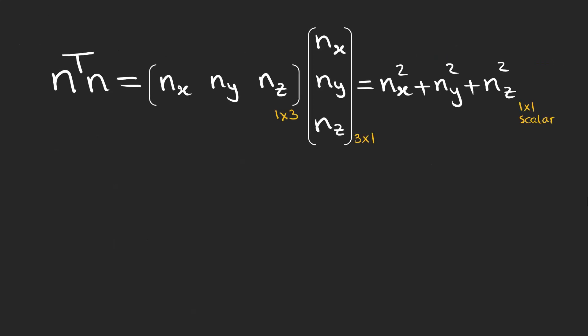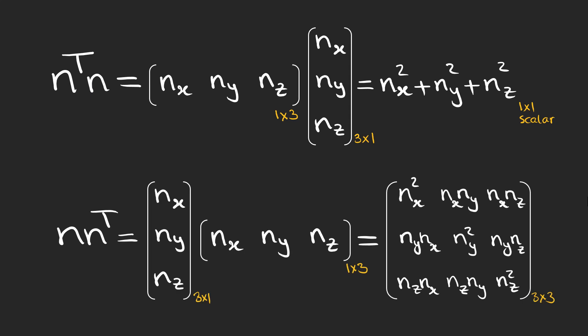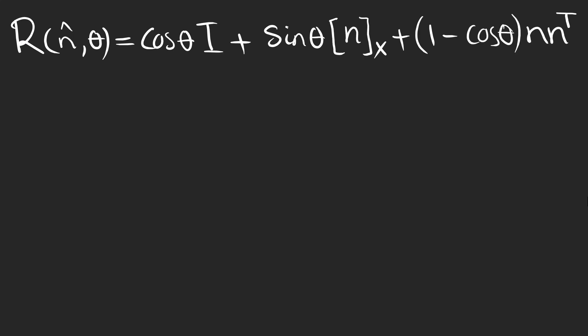Pay attention that n transpose is a 1 by 3 matrix and n is a 3 by 1 matrix. This product you see on the screen is called the inner product of the two vectors. On the other hand, this is called the outer product which gives a matrix with the dimension of the first vector multiplied by the dimension of the second vector. Now we can write our rotation matrix in this form. There are 3 terms and I hope by now the 3 matrices you see make sense.